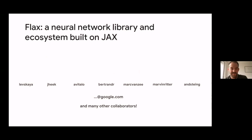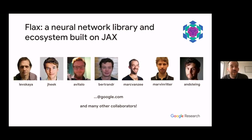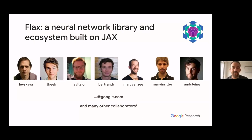Flax is a neural networking library and ecosystem built on JAX. We specifically call ourselves an ecosystem because we care about it in two ways. First, we want good open source support — lots of examples that run on cloud TPU, how-to guides, and an open source first approach with active GitHub discussions. On the other hand, we also curate recommendations for other libraries built on top of JAX. We don't want Flax to be a monolithic library; rather, it should be a collection of libraries that work well together.